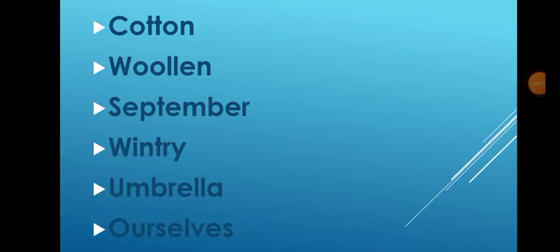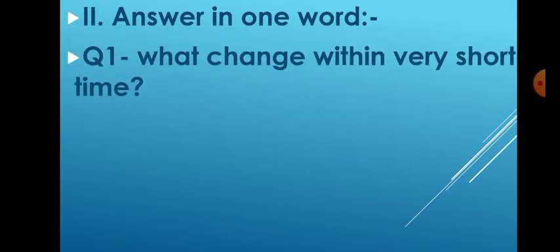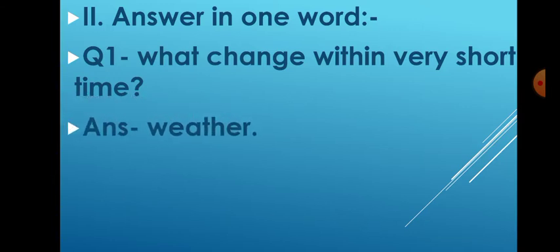The next word is 'ourselves' — O, U, R, S, E, L, V, E, S. After writing all the new words, leave one line and write Roman numeral two, then write 'Answer in One Word'. The first question is: what changes within a very short time? The answer is 'weather'. Weather changes in a very short time, while a season remains for a long time.